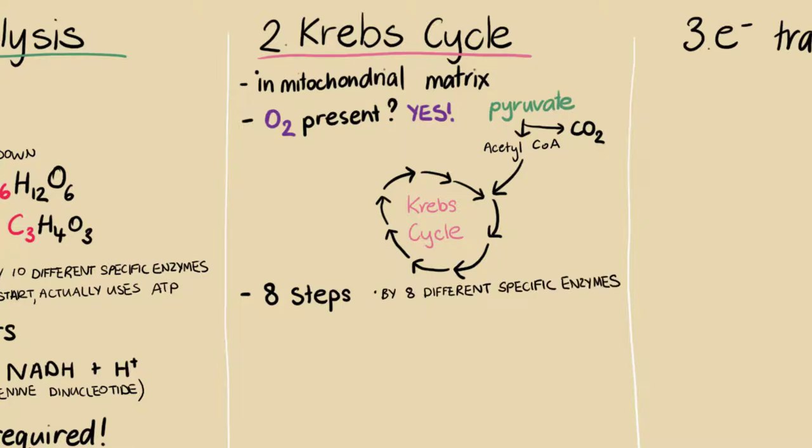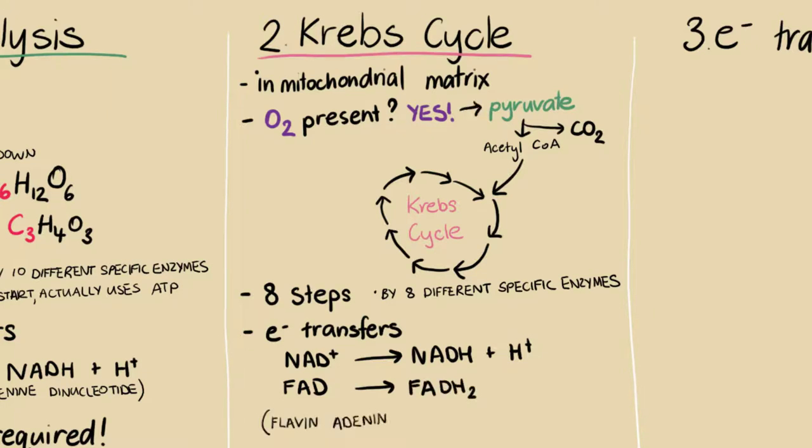Some more electron transfer happens in the Krebs cycle. Electrons are added to NAD+ to get NADH, and a similar molecule called FAD also takes on electrons to become FADH2.